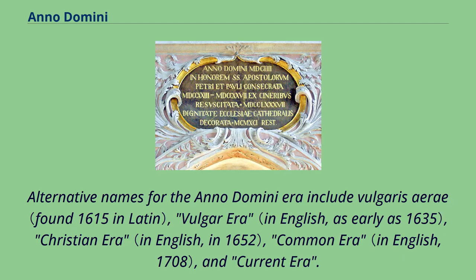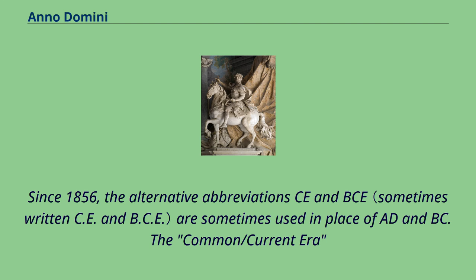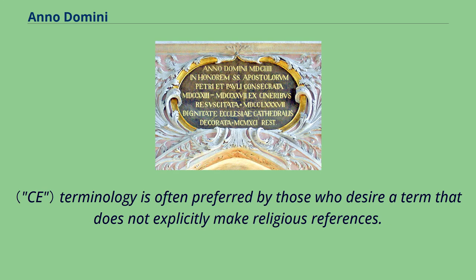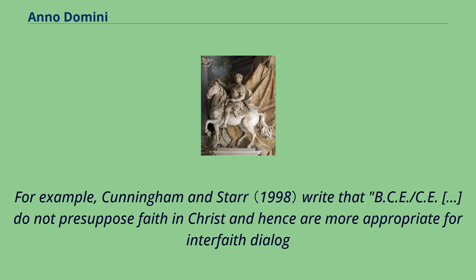Alternative names for the Anno Domini era include Vulgaris era, Vulgar era, Christian era, Common era, and Current era. Since 1856, the alternative abbreviations CE and BCE are sometimes used in place of AD and BC. The Common/Current Era terminology is often preferred by those who desire a term that does not explicitly make religious references. For example, Cunningham and Starr write that BCE/CE do not presuppose faith in Christ and hence are more appropriate for interfaith dialogue.